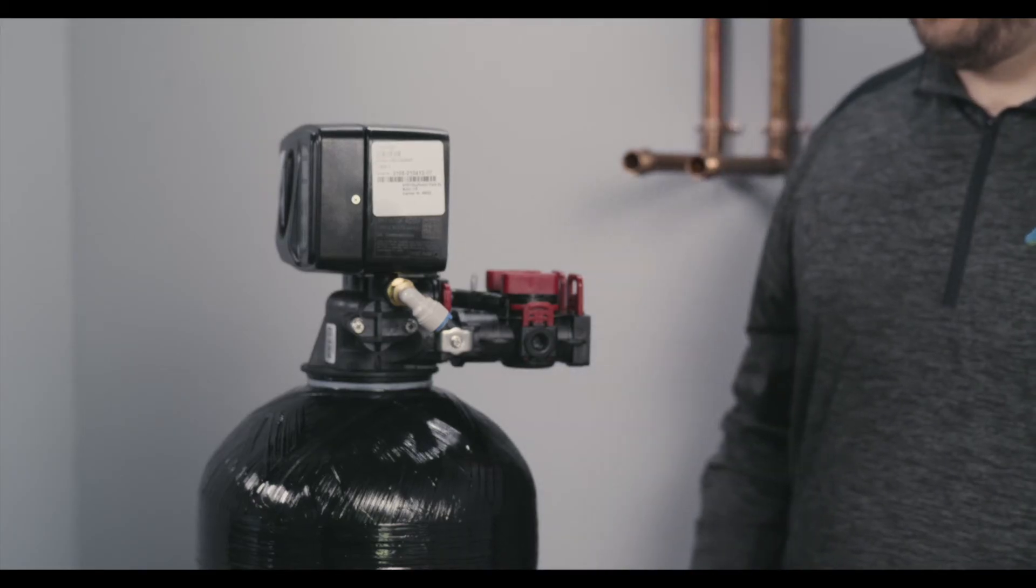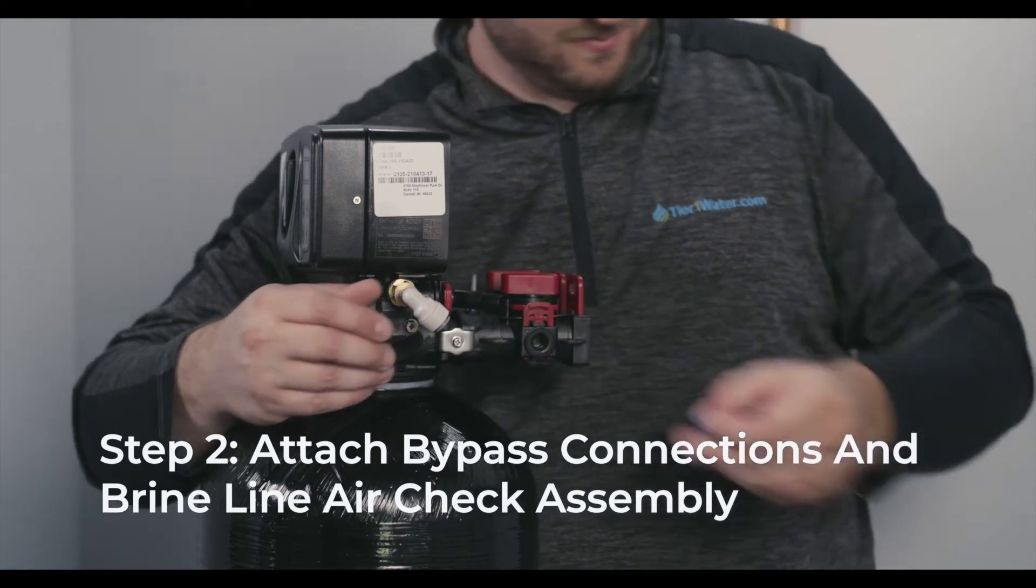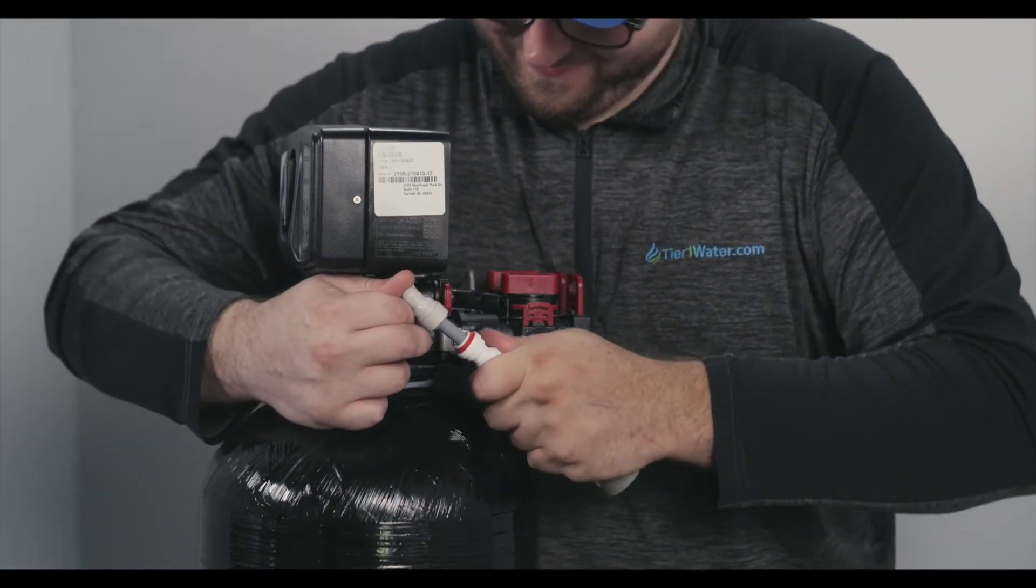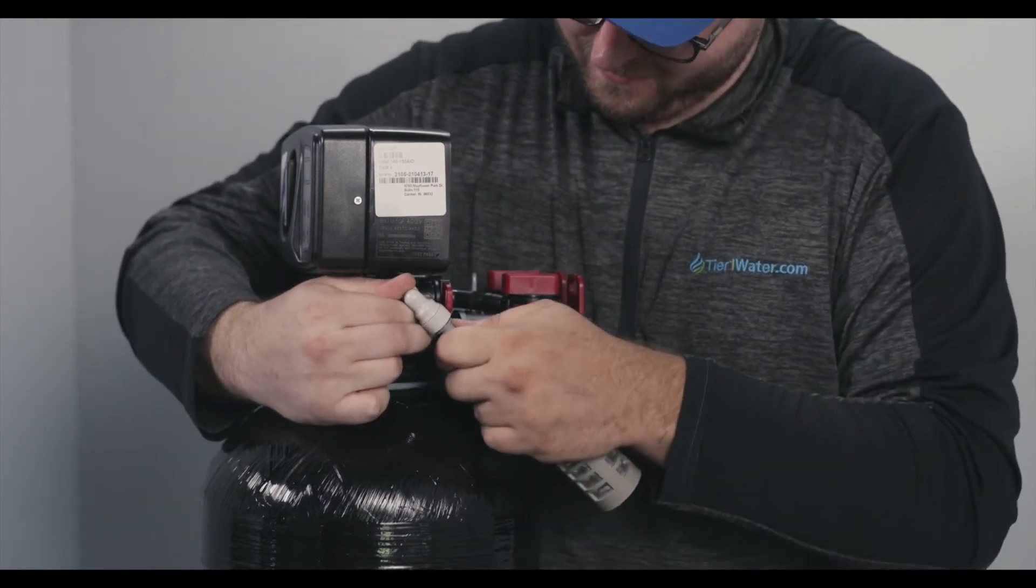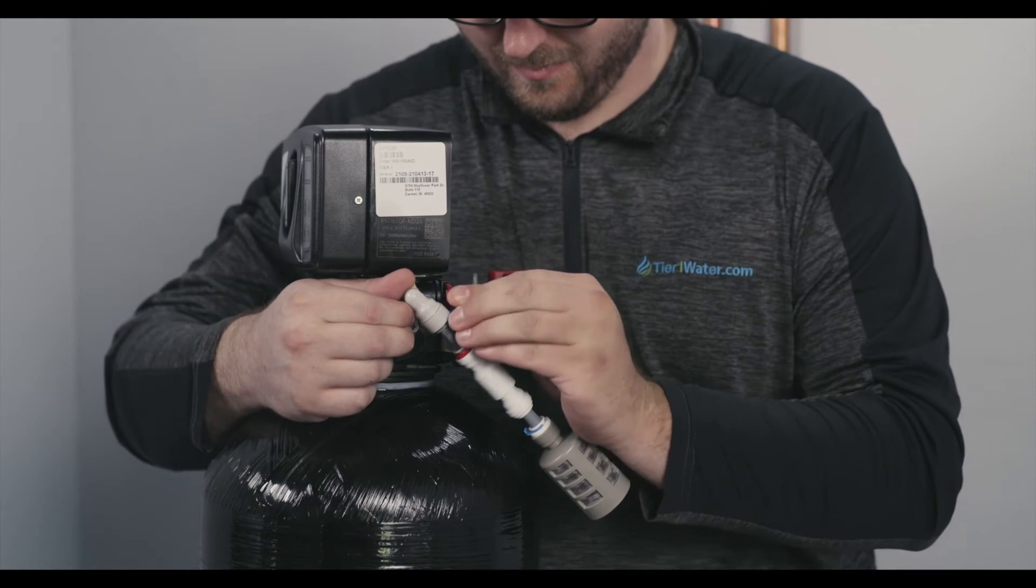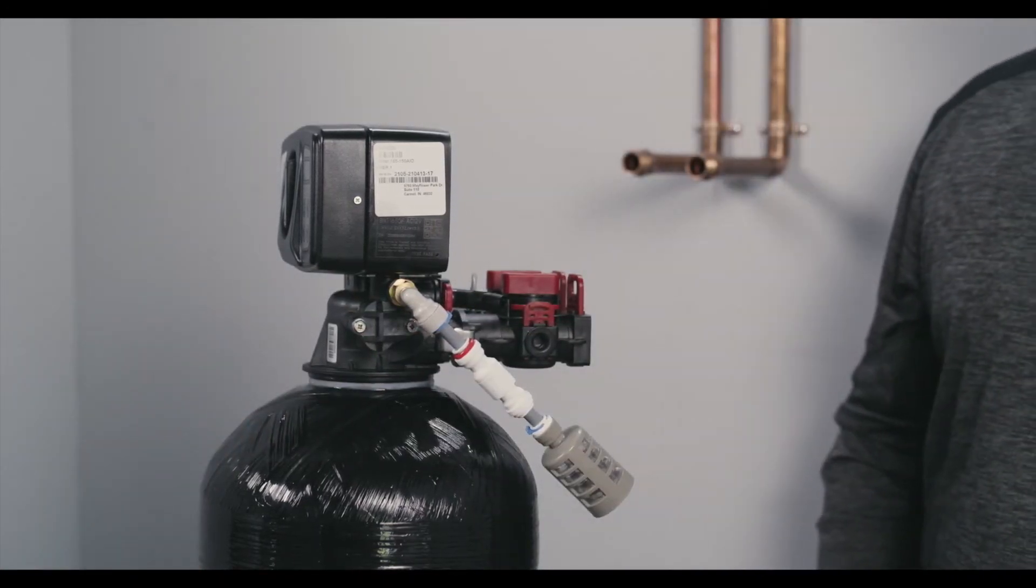Locate the air check assembly. Locate the brine line quick-knit fitting on the control valve. Ensure that the brass and plastic nuts are tightly connected to the air check assembly. Pull the blue C-clip from the connection. Insert the end of the air check assembly into the fitting. Pull back on the air check assembly to lock it, then reattach the blue C-clip to secure it.